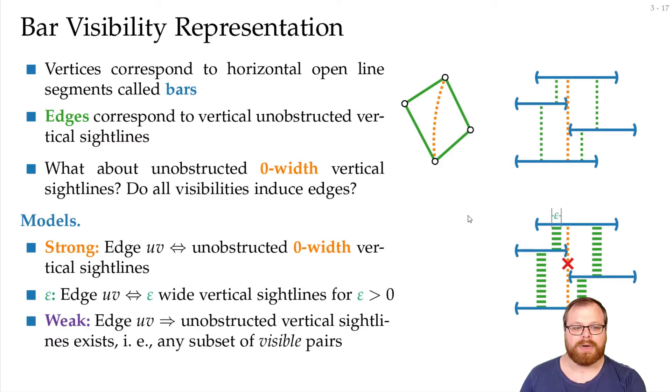And in the weak model we drop this if and only if. Here we say if we have an edge in our graph then there must be an unobstructed vertical sightline. So we have a subset of visible pairs. That means that this representation is also a representation of this graph. Although we have this visibility here but the edge does not exist.